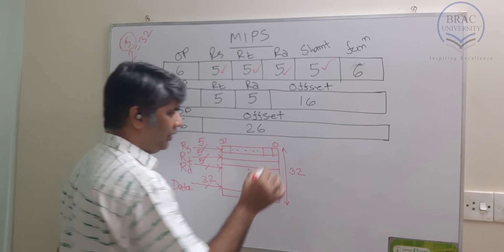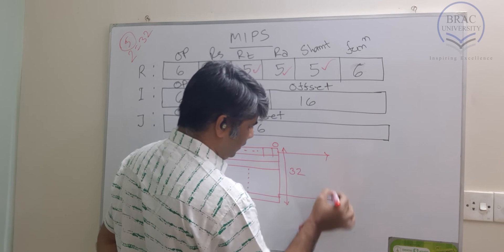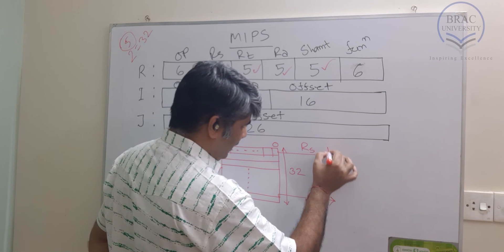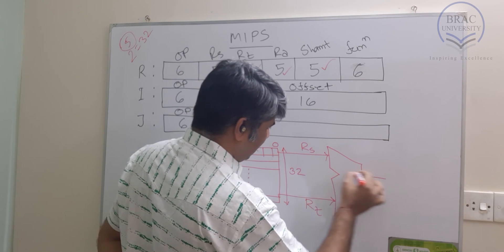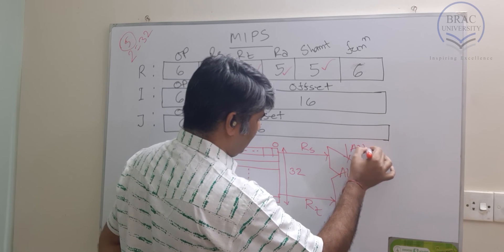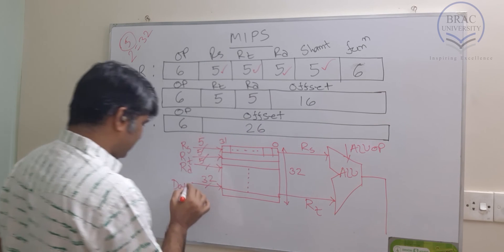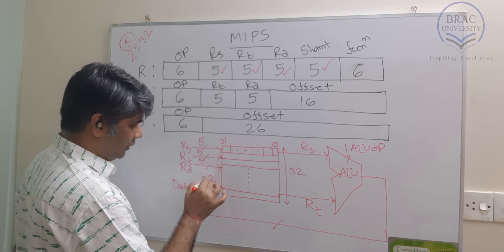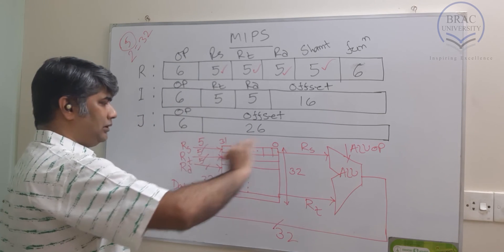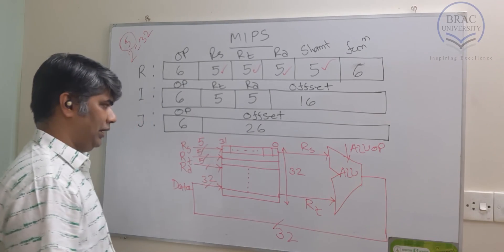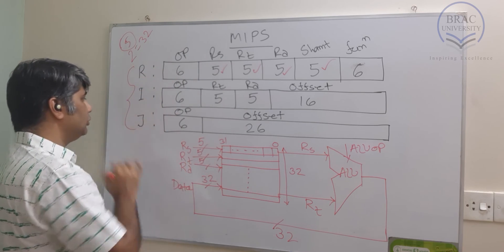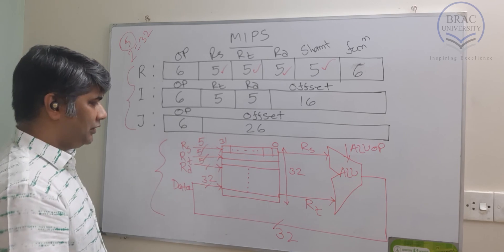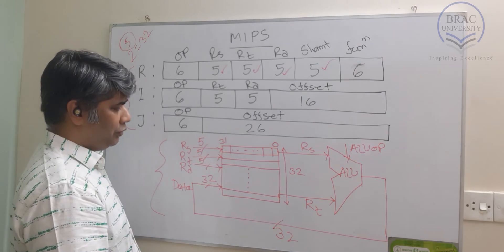Now let's extend this diagram. We have a configuration where a value comes from RS and another value from RT. This feeds into an ALU performing an operation — consider it an ADD operation. The ALU data is 32 bits. This shows a simple datapath. The instruction format on one side and the register file on the other side show how we select registers and perform data read operations from those registers.